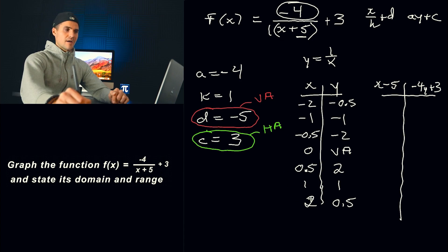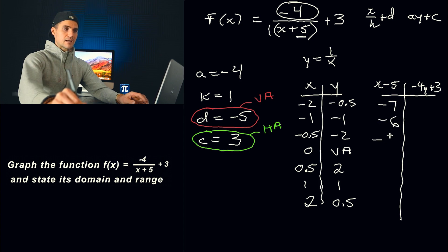Right? So all of these x values here, we're going to be putting them through this transformation. So, or this transformation x minus 5. So it's going to be negative 7, negative 6, negative 5.5. 0 minus 5 is negative 5. And then 0.5 minus 5 is negative 4.5. 1 minus 5 is negative 4. And then 2 minus 5 is negative 3.